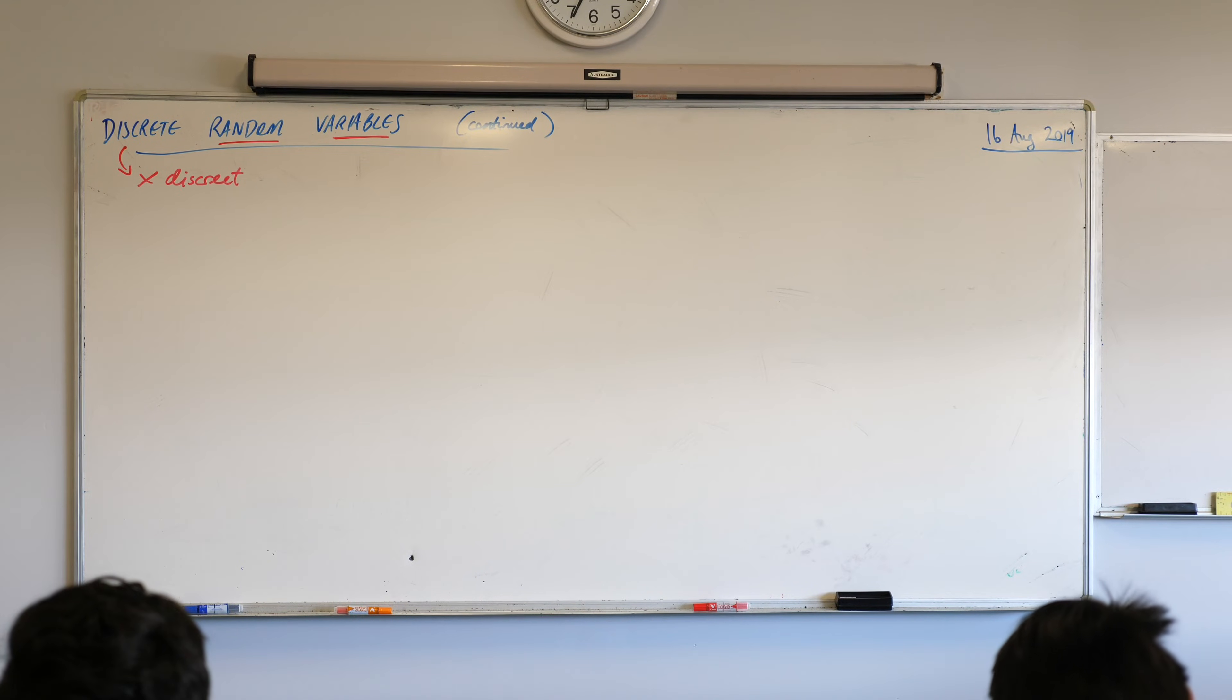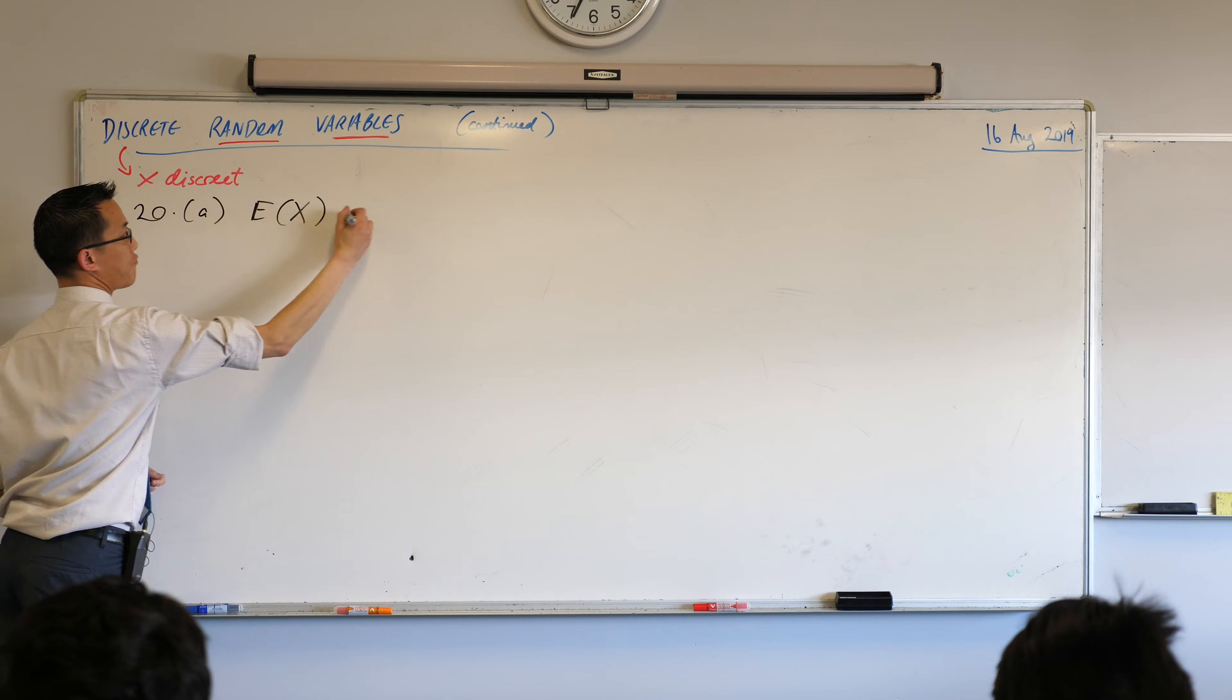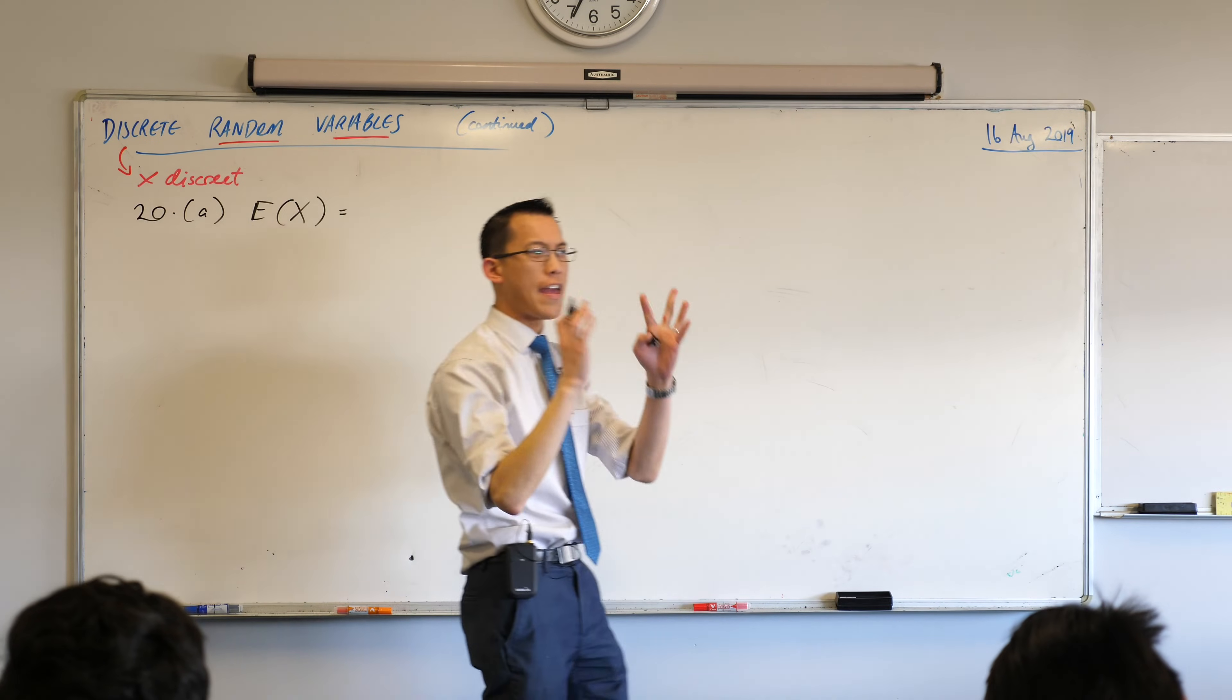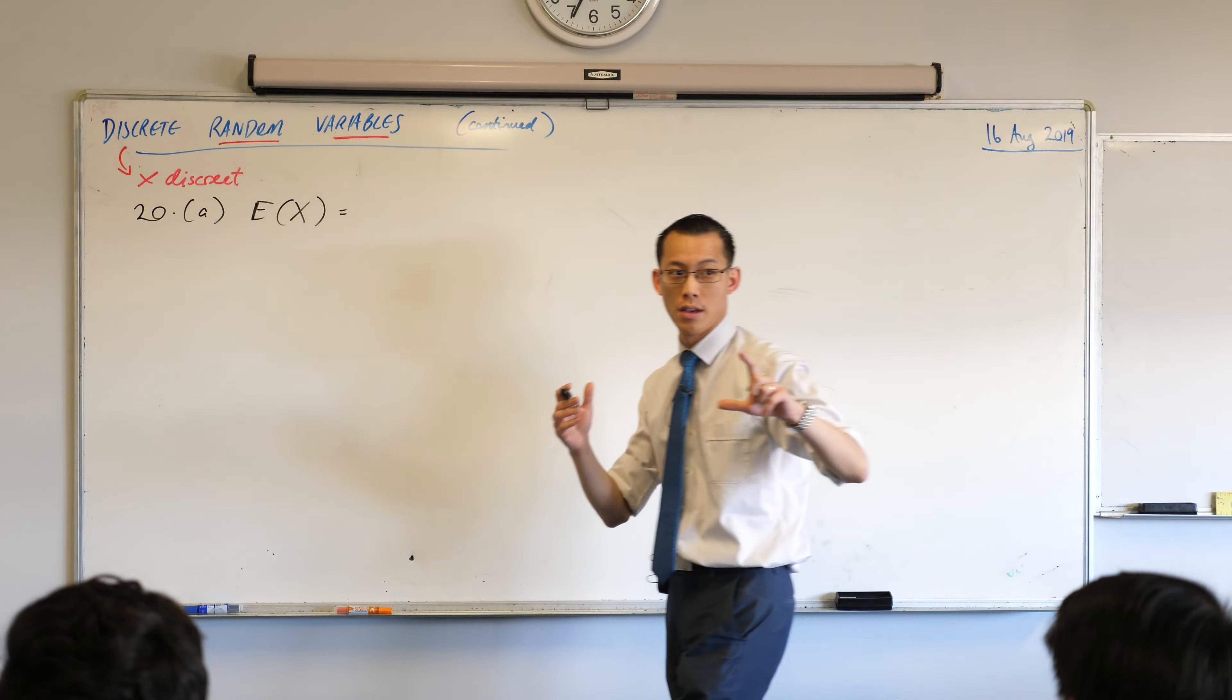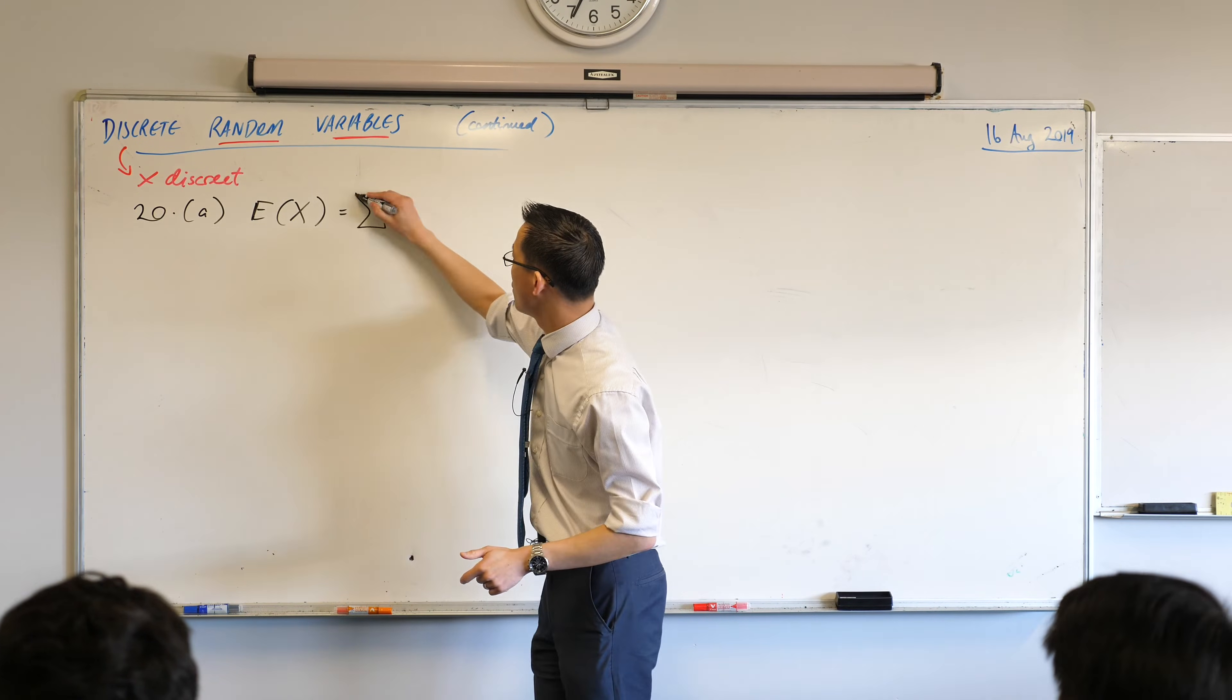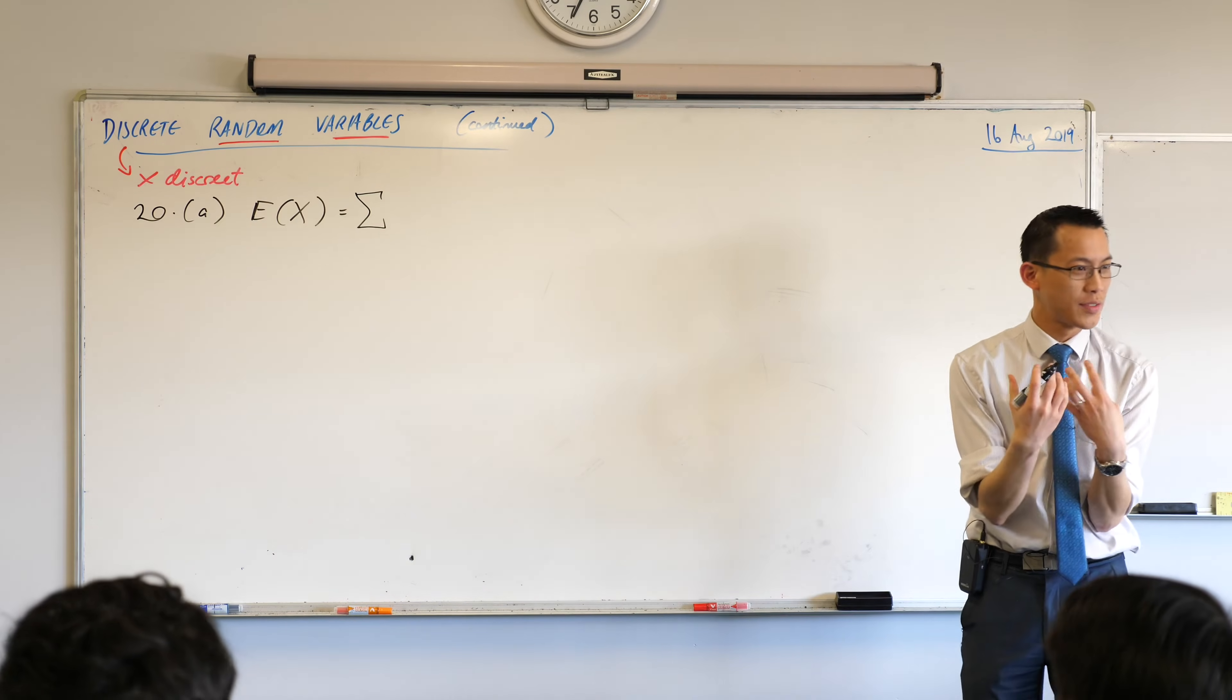So we want to calculate the expected value of this distribution. So we've got 20 part A. Let's just remember, what's the fancy way of saying the calculation for this? We use this weird Greek letter. Does anyone remember which one it was? The sigma. The sigma, very good. We use the sigma because the Greek letter sigma is equivalent to our S. S stands for what? Sum.